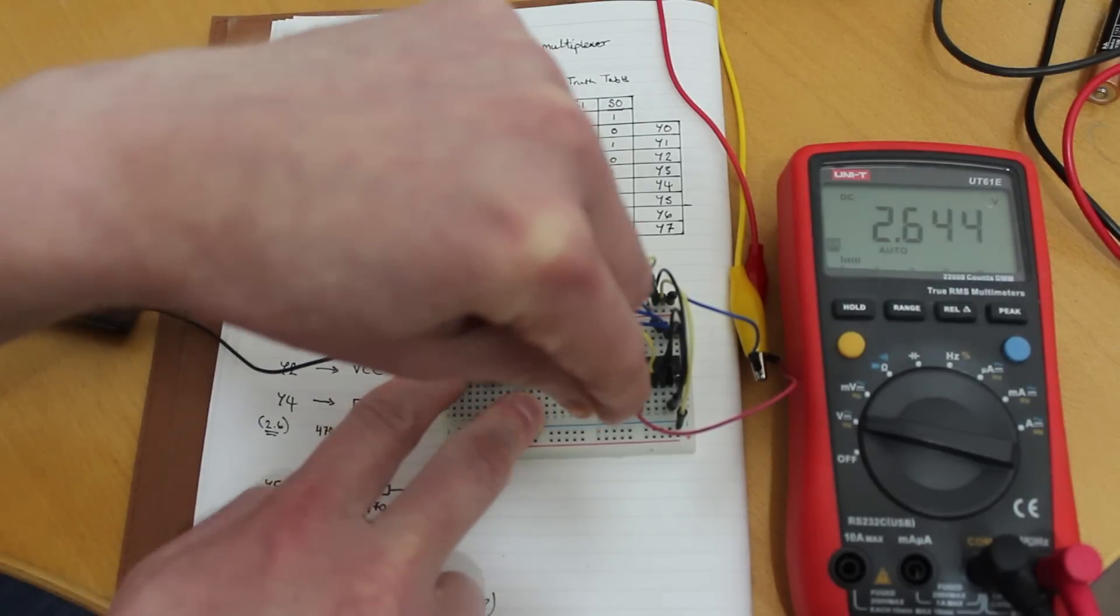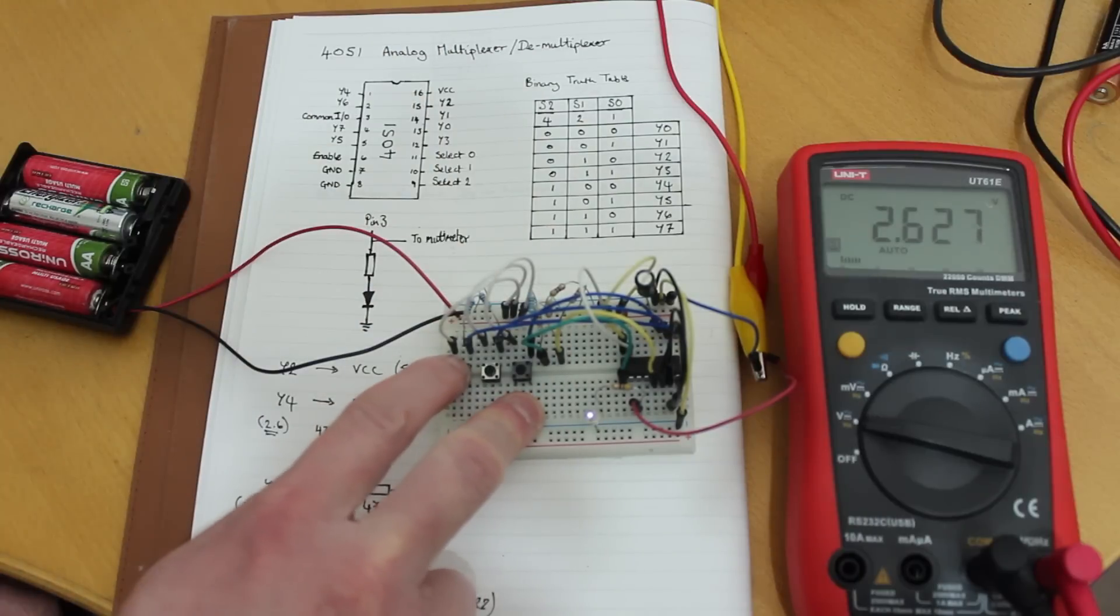But it would go up to 2.6. So that's what I expect to see. And you'll see that the LED is very dim there.